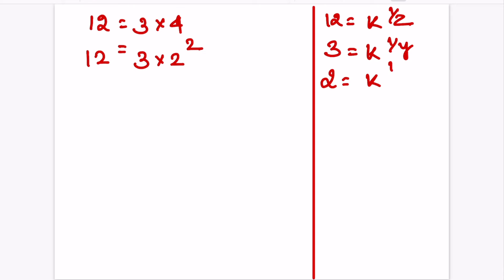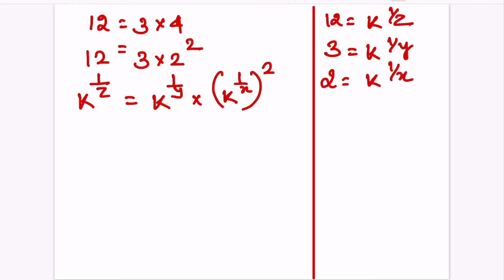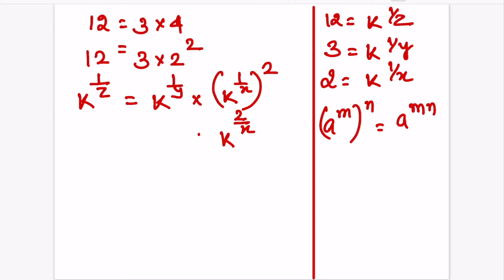So, k raised to 1 by z is equal to k raised to 1 by y into k raised to 1 by x to the power 2. Now, using the law of indices, a to the power m to the power n can be written as a to the power mn. So, we can write this as k raised to 2 by x. Similarly, this is k raised to 1 by y and k raised to 1 by z.